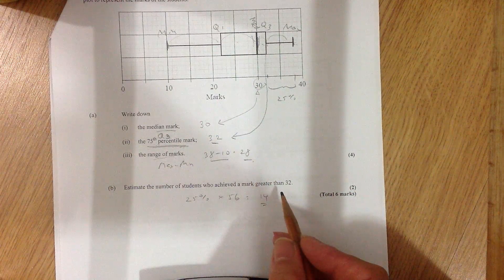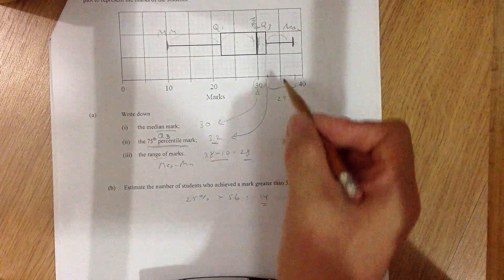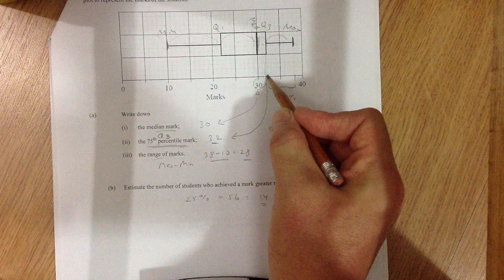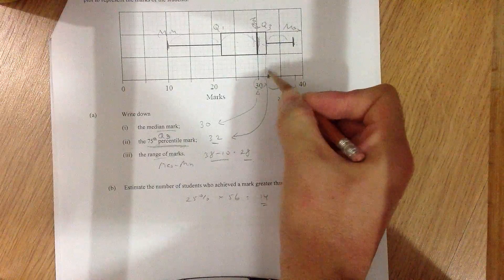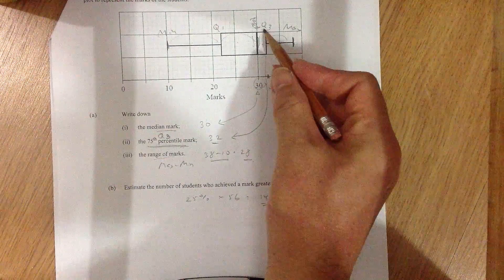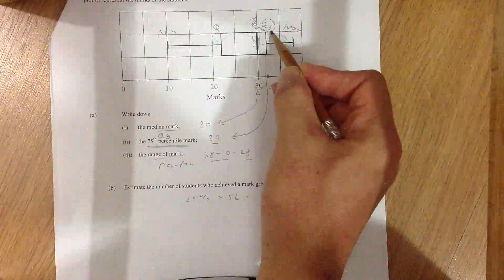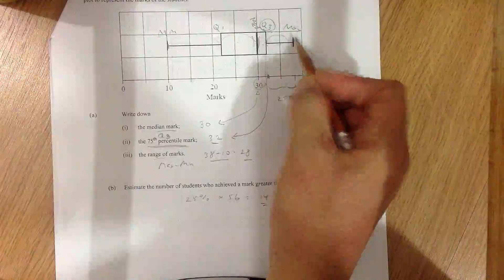Estimate the number of students who achieved a mark greater than 32. Okay, so 32 is here. And coincidentally, it's not such a coincidence actually. Whenever they make these problems, they purposefully do this. 32 is also what characteristic number? Well, it's Q3. And we know that between Q3 and max, there's 25% of the people.